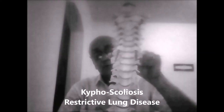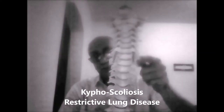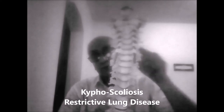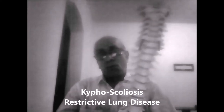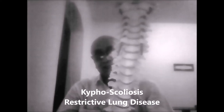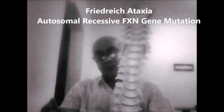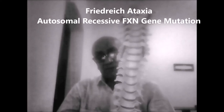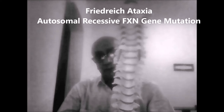Thoracic kyphosis associated with scoliosis is called kyphoscoliosis, which can produce restrictive lung disease. One condition — an autosomal recessive condition known as Friedreich's ataxia — is associated with kyphoscoliosis.